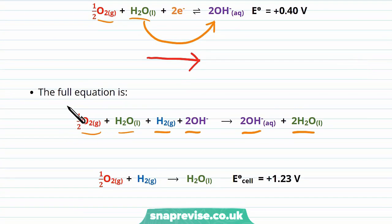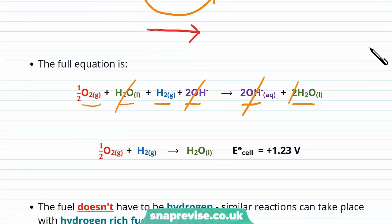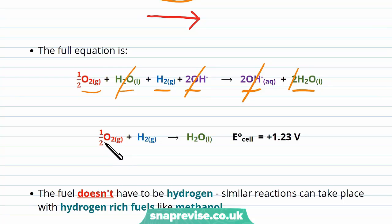we can now cancel things that appear on both sides of the equation, so both of the OH- ions cancel on each side, and one of the water molecules will cancel on the left side, with one of the water molecules on the right hand side. So the full equation is given by oxygen, half a mole, of O2, combining with hydrogen to form water.